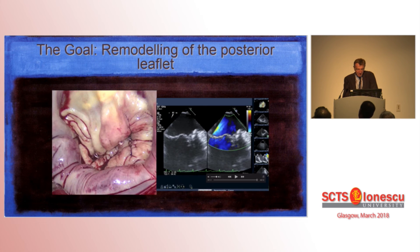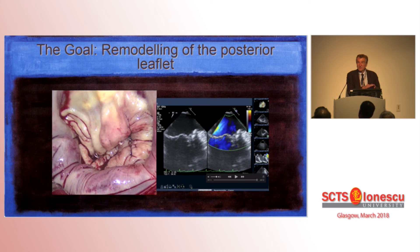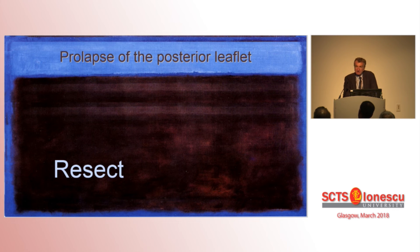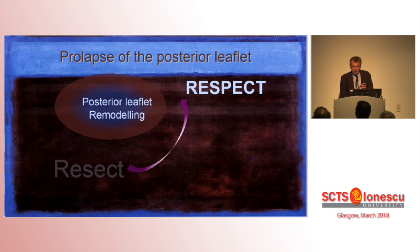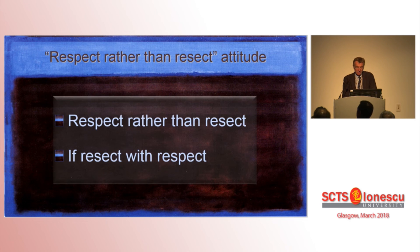What you want at the end of the operation is a posterior leaflet that is flat, regular, and lies nicely on the posterior wall of the left ventricle. You may need to resect, but most of all you have to respect the tissue. The goal is to remodel the posterior leaflet and achieve the optimal surface of coaptation. Respect rather than resect — and if you do resect, you should do it with respect.